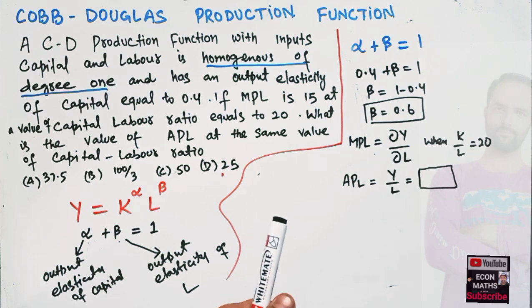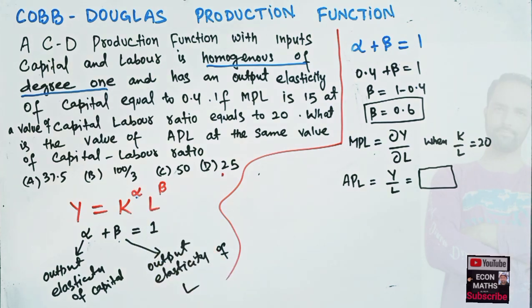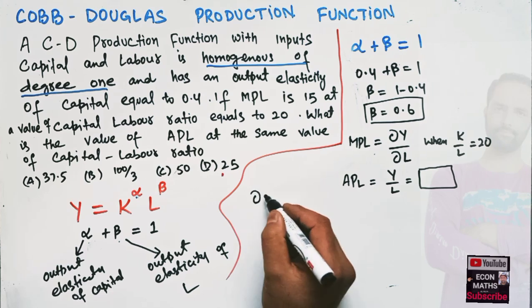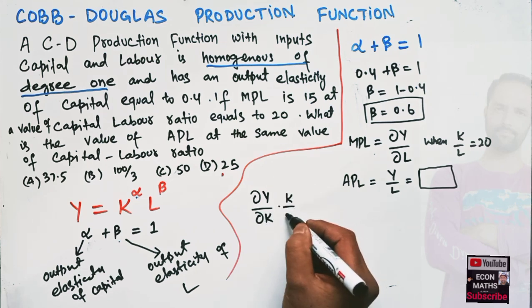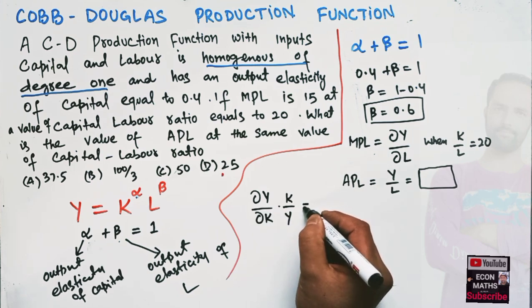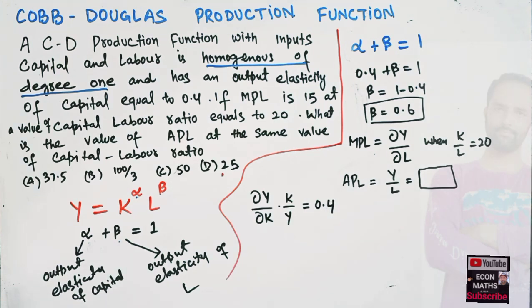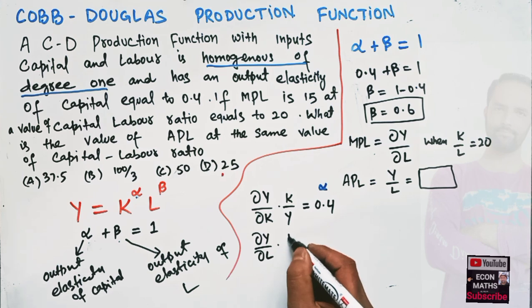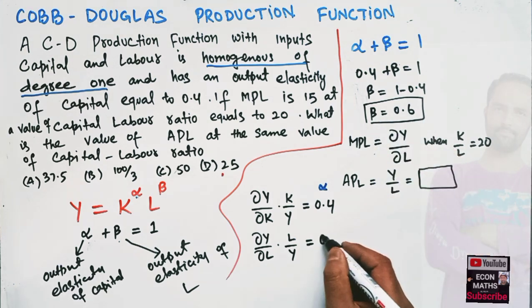The output elasticity of capital can be written as (dY/dK) times (K/Y), and it equals 0.4, which is our alpha. The output elasticity of labor is (dY/dL) times (L/Y), and we calculated this to be 0.6.